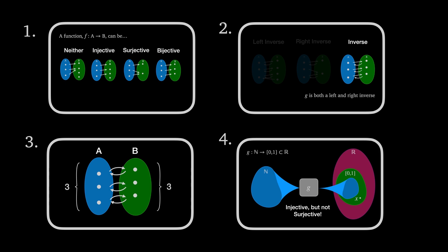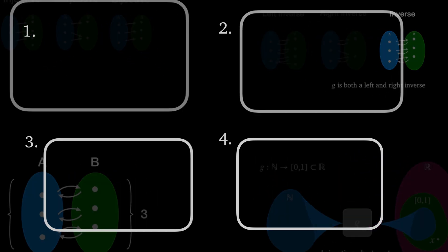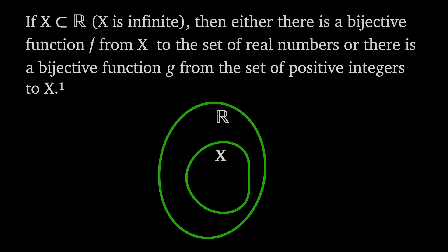But first, a well-known problem written in a slightly non-standard way. If X is an infinite subset of the real numbers, then there's either a bijective function from X to the real numbers, or there's a bijective function from the natural numbers to X.